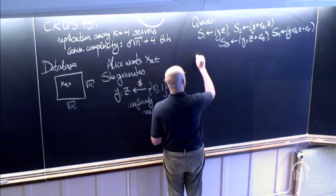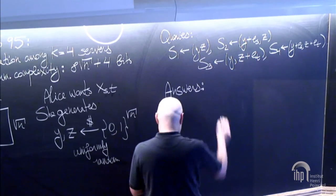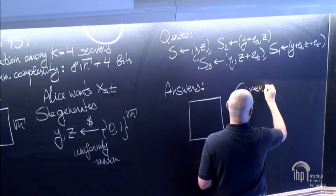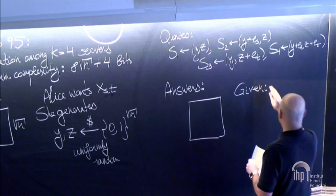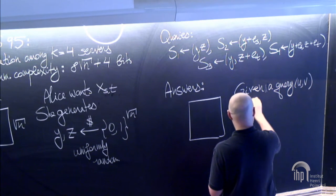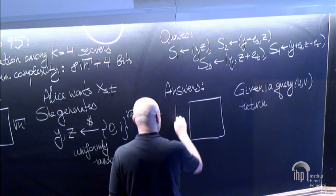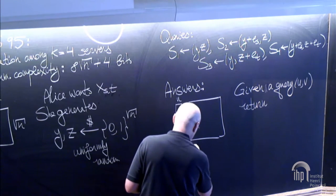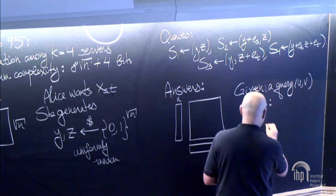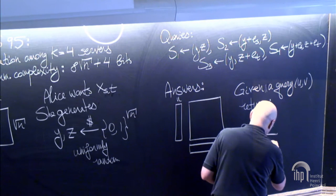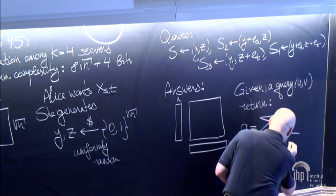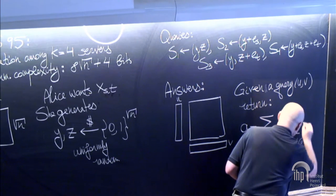What does the database do? The answer is very easy. Given a query, let's call it (u, v), the server returns one bit: the sum over the support of u and the support of v of x_{i,j}. So with vector u indicating rows and vector v indicating columns, it's the sum modulo 2 of all bits at those intersections.